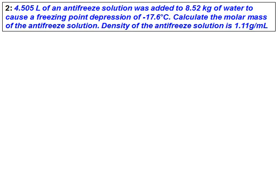4.505 liters of an antifreeze solution was added to 8.52 kilograms of water, and it causes a freezing point depression of negative 17.6 degrees Celsius. Calculate the molar mass of the antifreeze. Density of the antifreeze solution is given. Any time molar mass is asked, you have to calculate the molality. This is the case where freezing point depression is given, so we can calculate the molality.